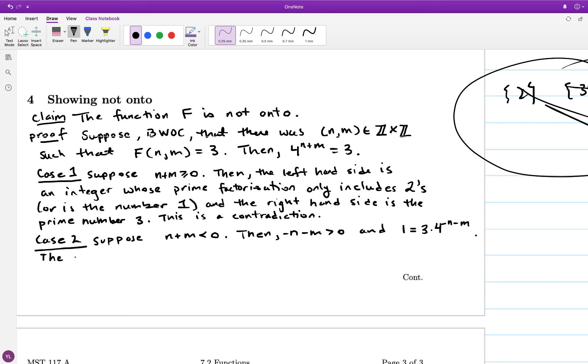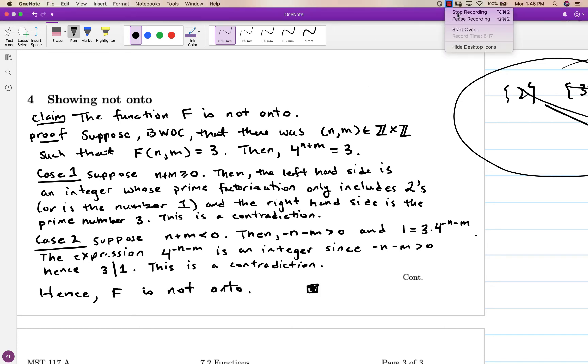And so if I look at the equation manipulating the original equation to 1 equals 3 times 4 to this positive number, then I'm looking at the right hand side is a demonstration that the number 1 is divisible by 3. But of course we know that to be a false statement, so I've reached a contradiction in this case as well. So I've demonstrated that the number 3 could not possibly be an output of this function, otherwise I get a contradiction so I can conclude that f is not onto.